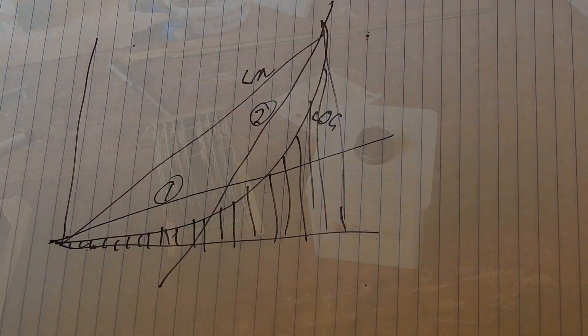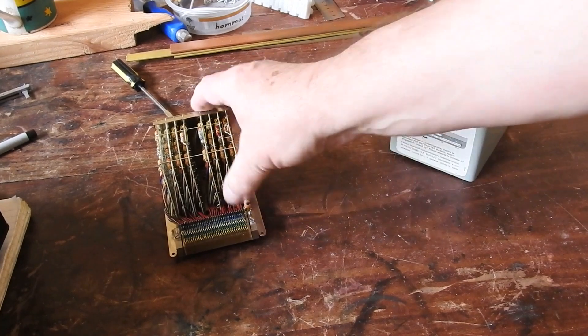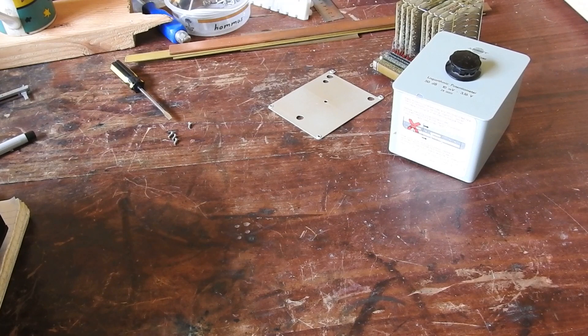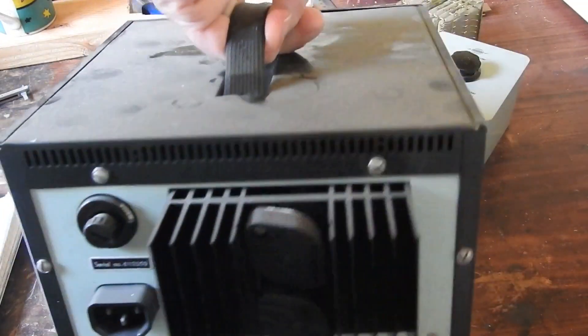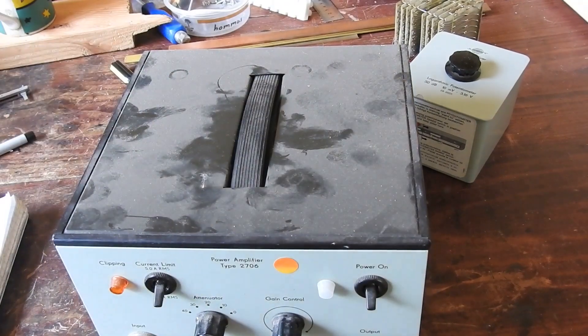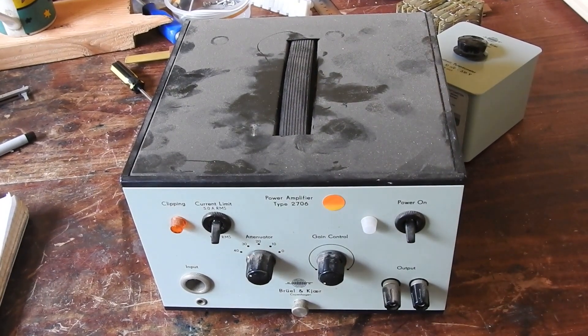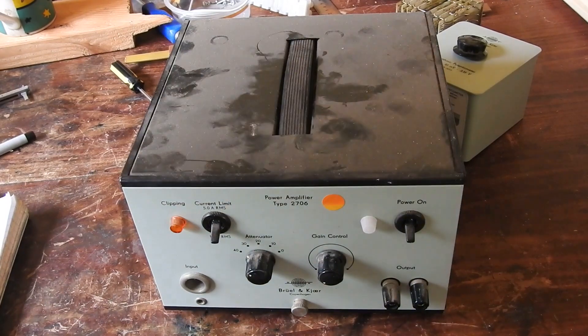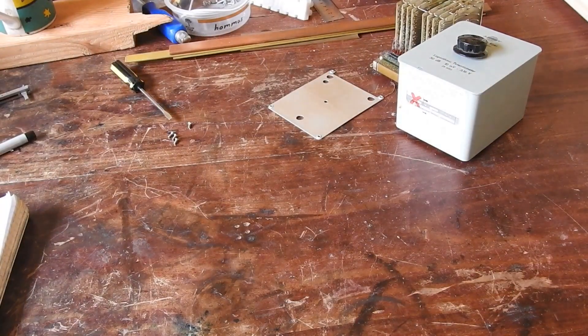Yeah, so there you go. This isn't much of a tear down is it. To make up for that, next time I will do this guy, which is a Type 2706 power amplifier by Bruel & Kjær. A bit dusty, I'll clean it up for then. If you're looking forward to seeing that, don't forget to subscribe and like if you've enjoyed this video. And catch you later. Bye.